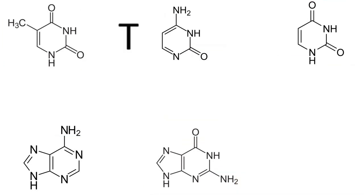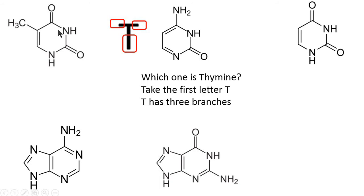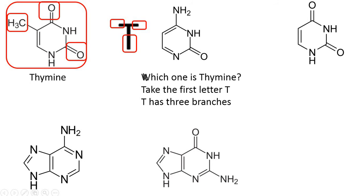The next nitrogen base to identify is thymine. To identify thymine, remember the T rule. Take the first letter T from thymine — T has three branches: branch one, branch two, and branch three. Now search for the compound that has three branches attached to the ring. Only this structure has three branches attached to it. The rest of the structures have two branches or only one branch. So this is the only compound with three branches, just like T has three branches — so this is thymine.